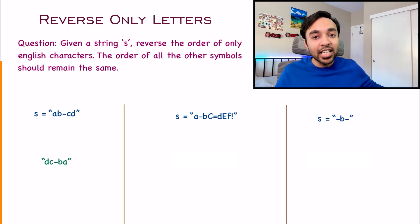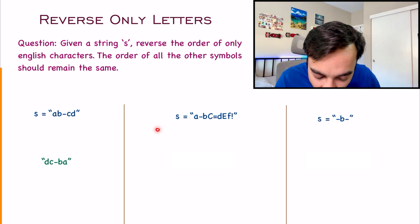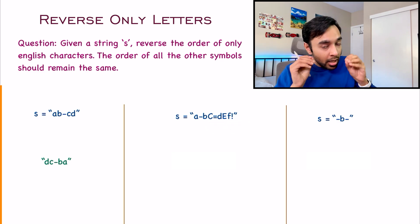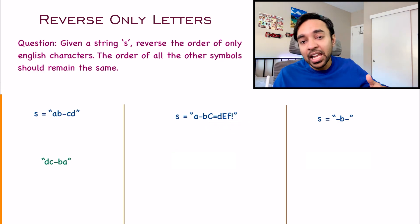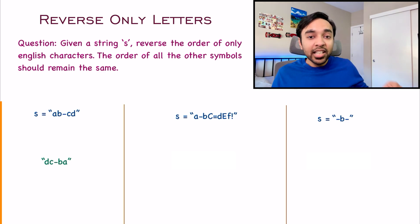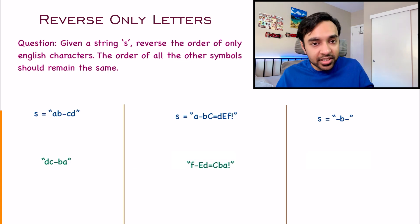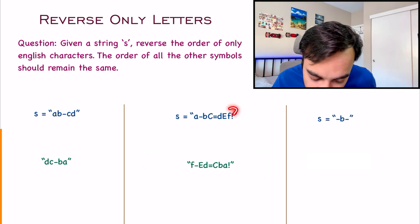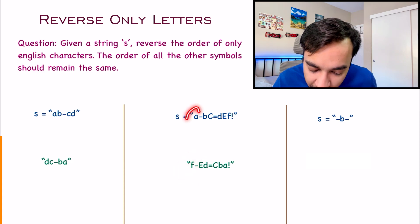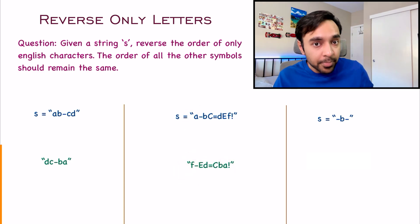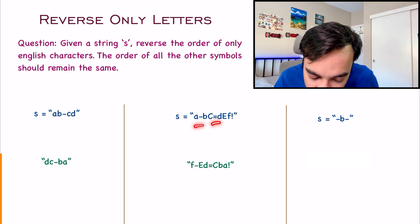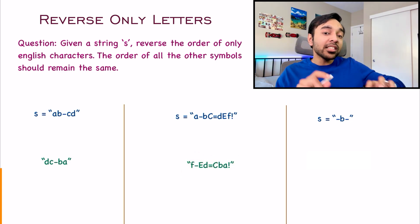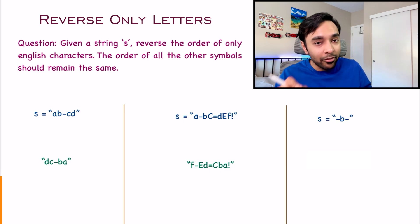It will be even clearer with the next test case. In the next test case, I have a bigger string with a few more characters — it has a hyphen, an equal sign, and an exclamation mark. Notice that you have to reverse the order of only English alphabets. All of the other symbols or characters will remain in their original place. All of the English alphabets are in a reverse direction. F came at the very end, so it is at the very beginning. A was at the very beginning, so now it is at the very end. But notice, all of the non-English alphabets like the hyphen, the equal sign and the exclamation — they are at their original places, unchanged.